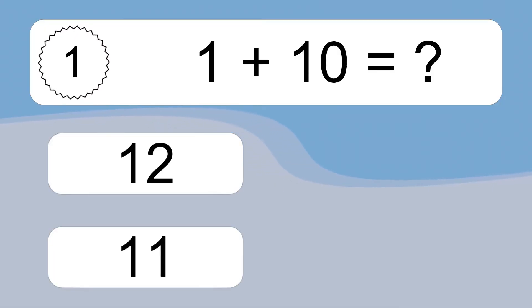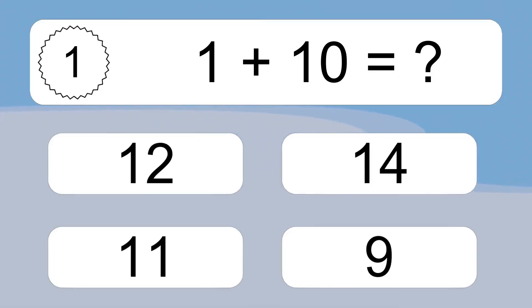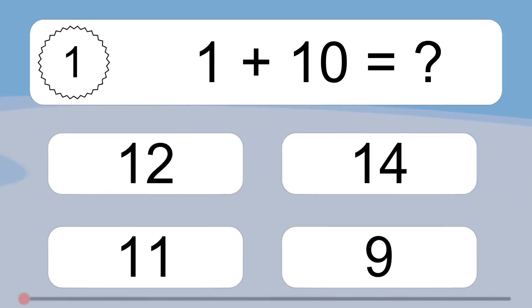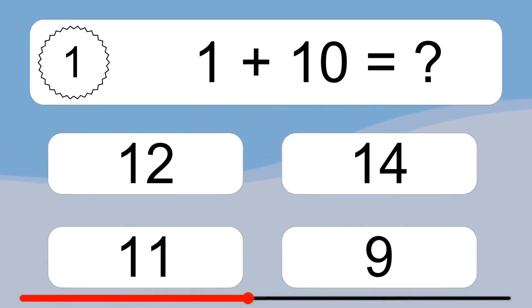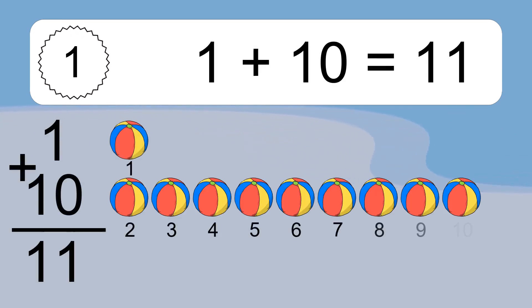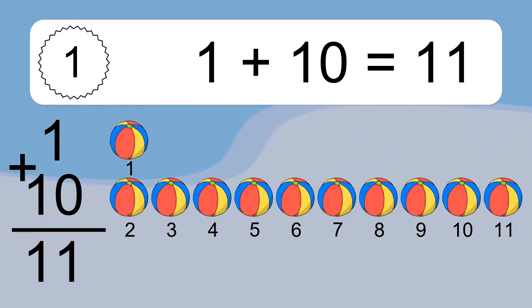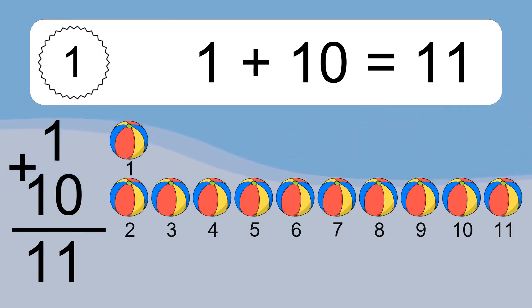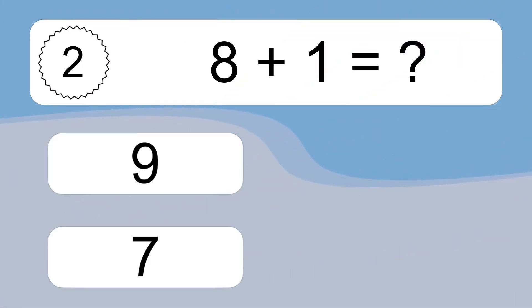1 plus 10 equals what? 1 plus 10 equals 11. Let's count it: 1, 2, 3, 4, 5, 6, 7, 8, 9, 10, 11.